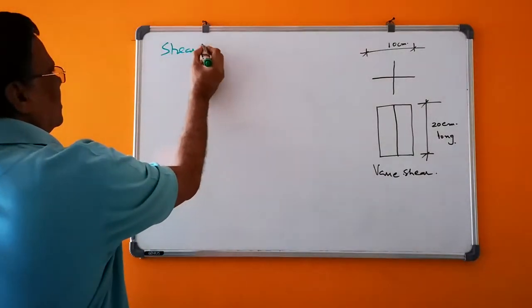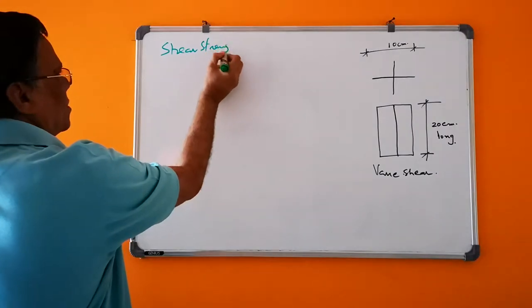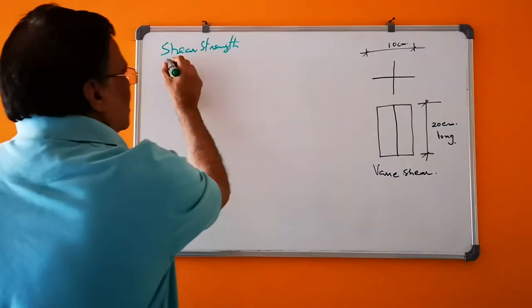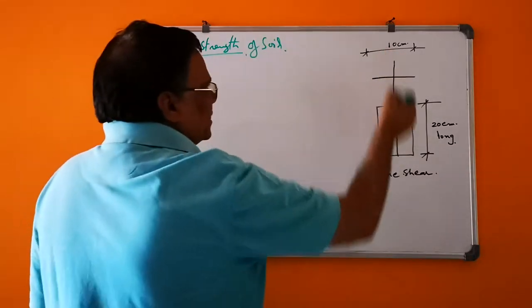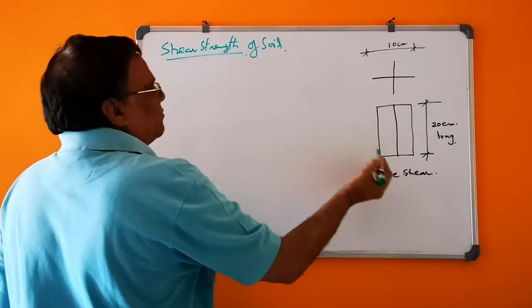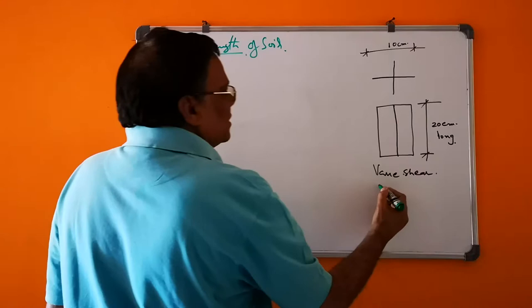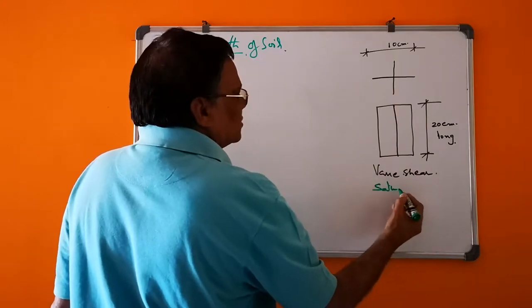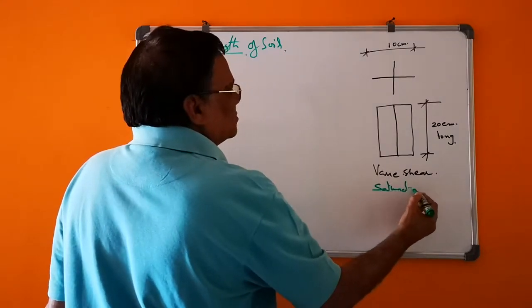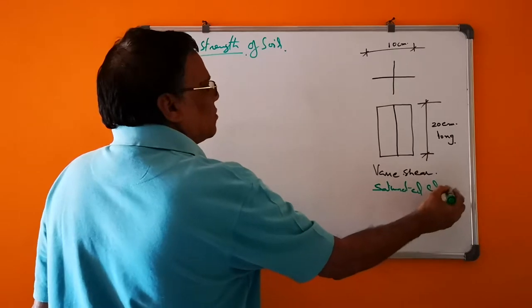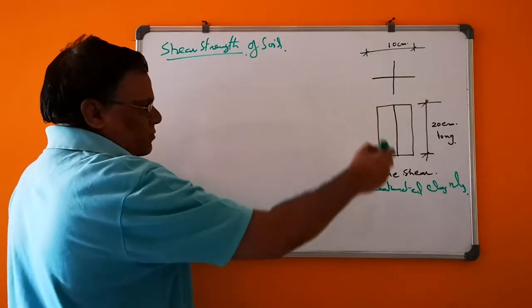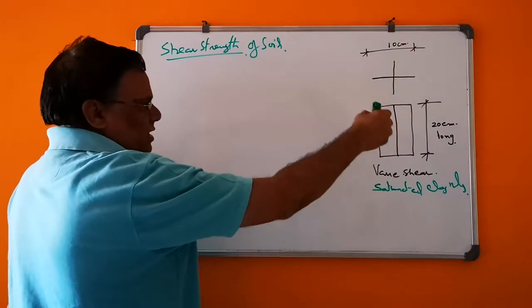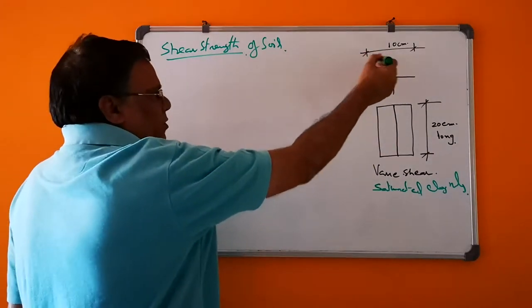Shear strength of soil. First, Vane Shear. The Vane Shear test is done on saturated soils only, saturated clays only. This is the Vane which is inserted into the soil and it is rotated.